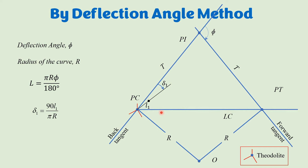The peg interval is usually kept constant to simplify calculations. For the second point, we use twice the deflection angle from the PC-to-PI line, and mark the distance l1 from the first point along the new direction. This gives us the second point on the curve. For the third point we use three times the deflection angle, again marking l1 from the previous point, placing the theodolite remaining at PC throughout.